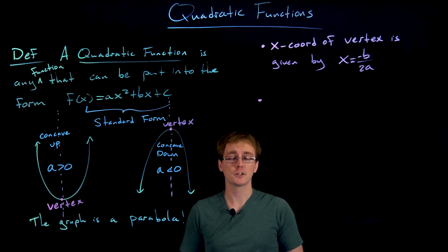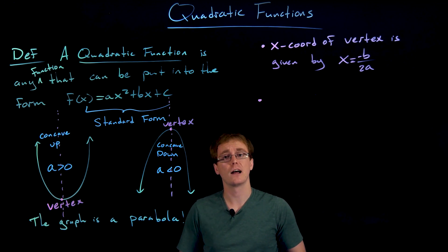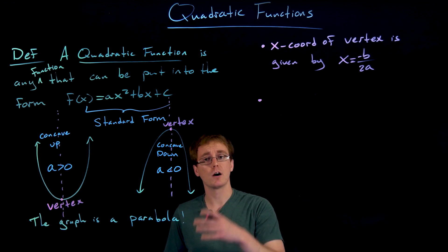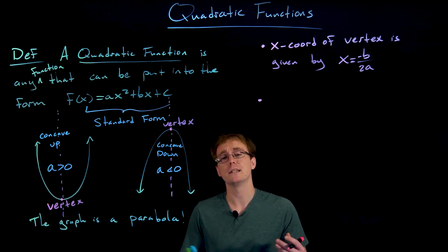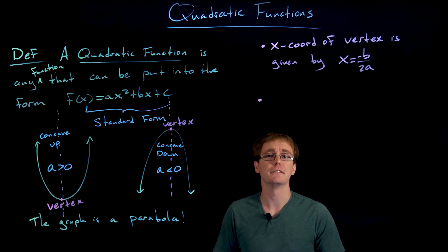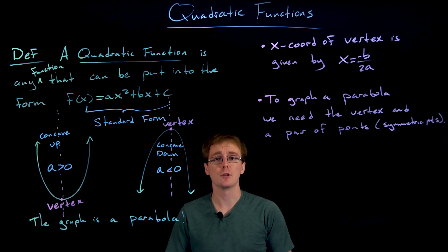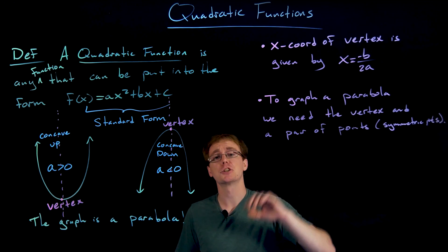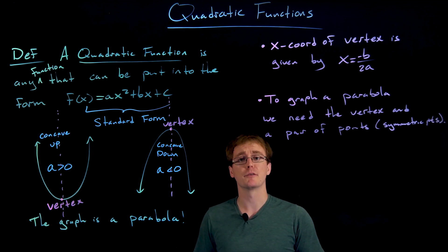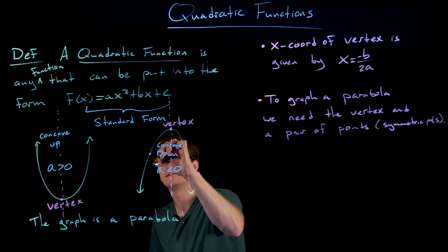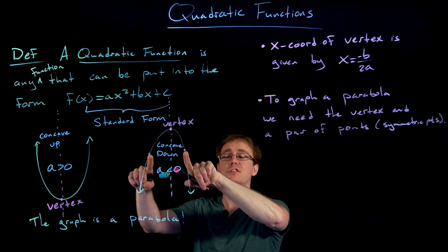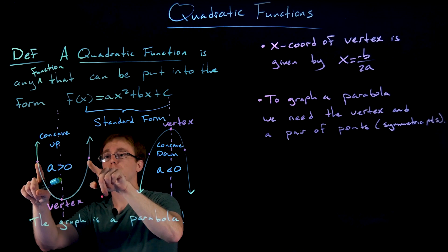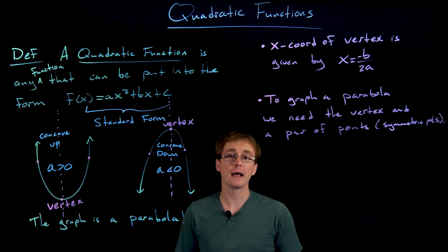Earlier we reviewed how to graph linear functions — to graph a line we need two points. For a parabola or quadratic function we need a little bit more information — basically three points — and one of those points we always want to be the vertex. We want one point to be the vertex, and we also need an additional pair of points; ideally those are symmetric points, meaning they have the same y-value.